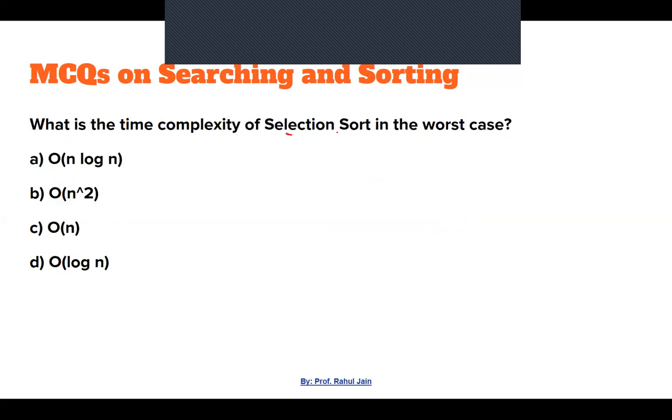What is the time complexity of selection sort in the worst case? For selection sort, O(n²) is the time complexity for the worst case. So option B is the correct answer.